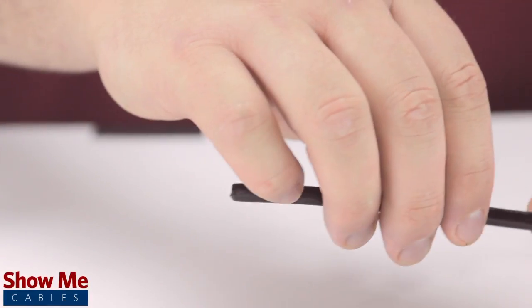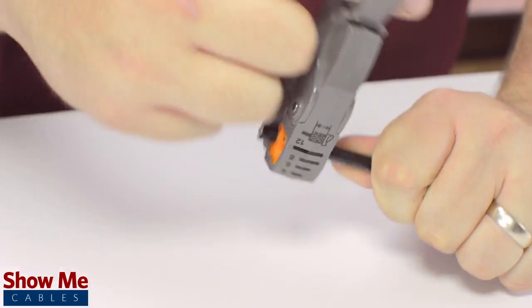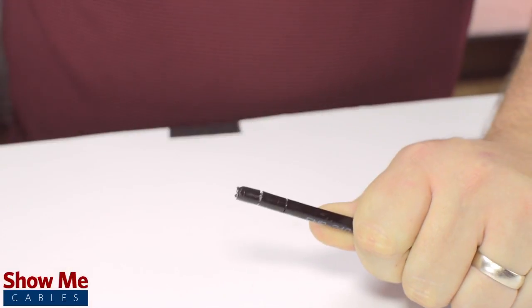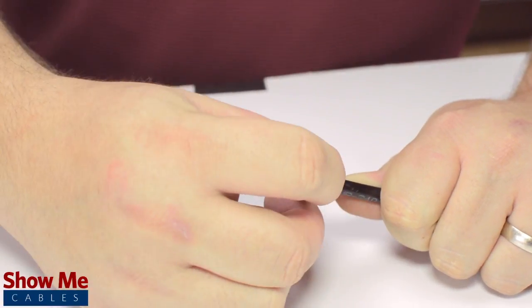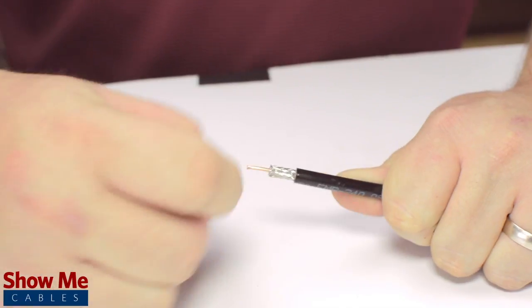Start by inserting the ferrule over the outer jacket of the cable. Then using your cable stripper, strip back the outer jacket and dielectric. The advantage of using a cable stripper is that it will strip back the jacket and dielectric at the same time.